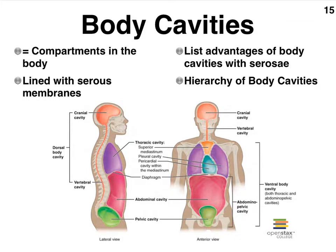Think of these as chambers in your body, delineated by walls of membranes — they're called serous membranes, but we'll look at those in more detail in just a moment. It's advantageous for our organs to be located in these body cavities so that they don't shift around.